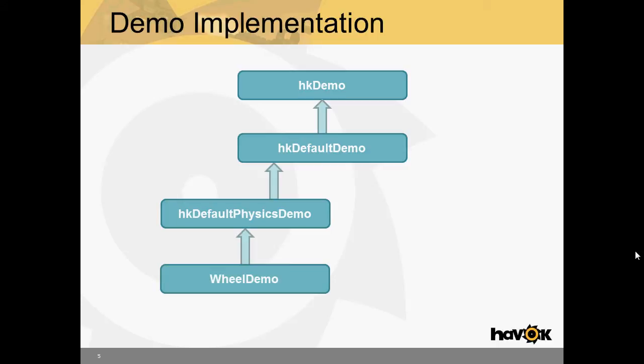For example, WheelDemo that's provided with the SDK inherits off of HKDefaultPhysicsDemo and just provides the functions necessary for the WheelDemo, creating the physics objects, handling any user input, and so on.